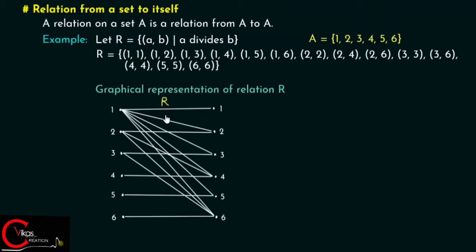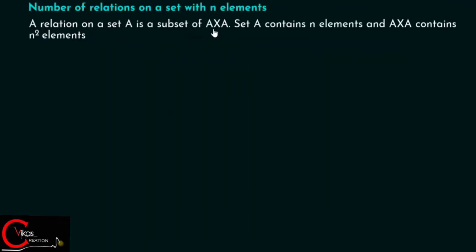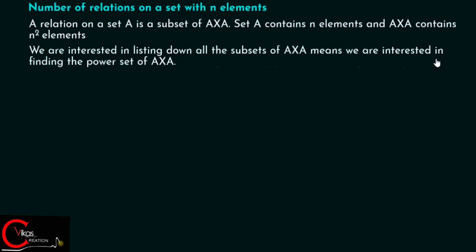Now, after understanding how to define a relation from a set to itself, we will try to find out the number of relations on a set — that is, on a single set with n elements. We know that a relation on a set A is a subset of A cross A. If set A contains n elements, then A cross A contains n squared elements. We are interested in finding the power set of A cross A, which lists all its subsets, to find the number of relations.